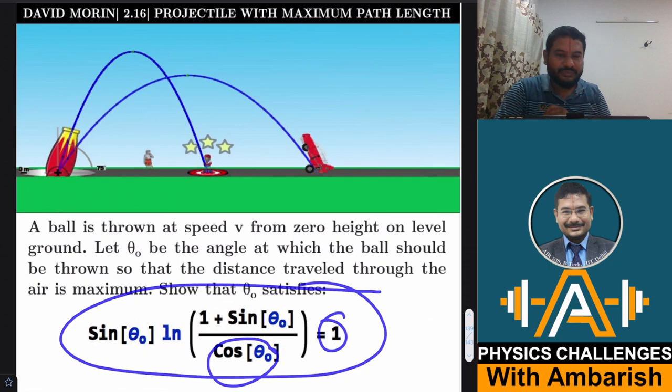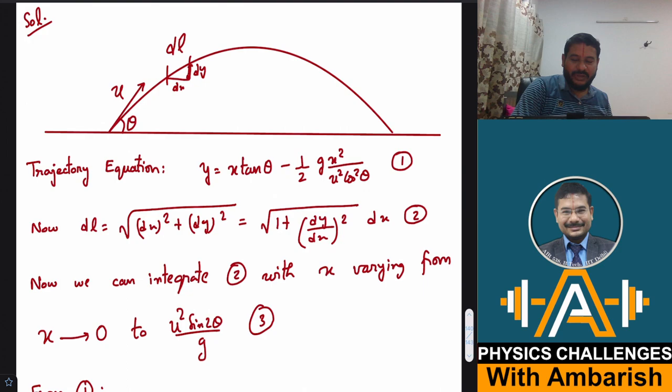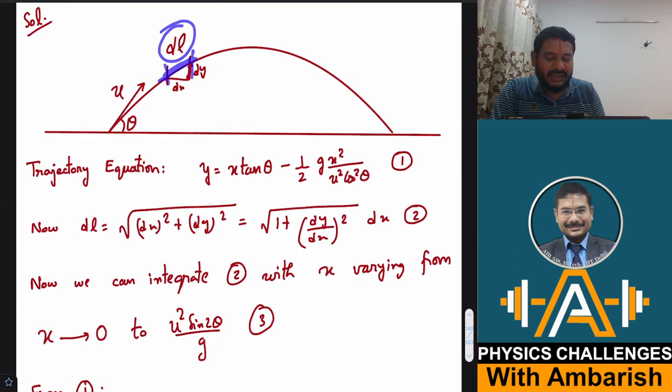If you want, you can give it a try. I will get into my analysis right away. So let us see. So u is the projection speed. Let us say theta is the angle of projection. Now consider a small element of the path. So let us say its length is dl and obviously dl is nothing but dx square plus dy square because this is kind of right triangle we can make, since a small segment of any curve is almost like a straight line. So this should be dx square plus dy square.